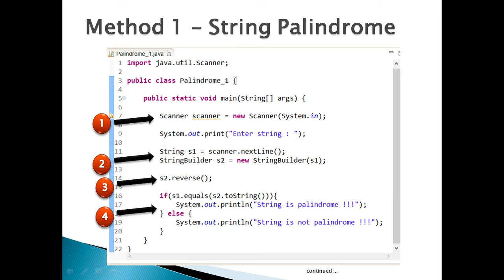Step 4: the final check is to compare string s1 with s2 using the equals() method. If s1 and s2.toString() come out to be equal, then string s1 is a palindrome; otherwise s1 is not a palindrome.